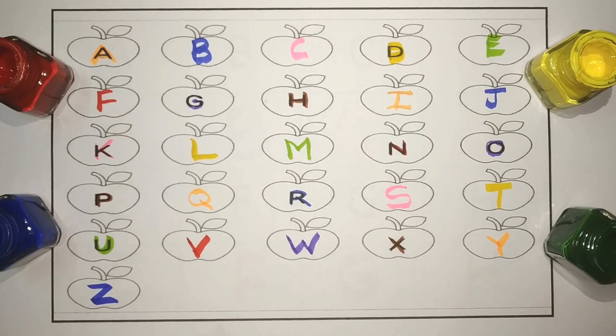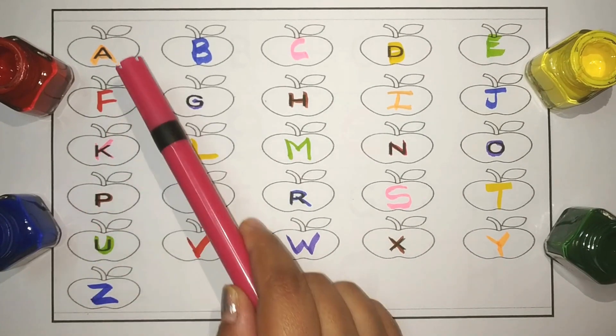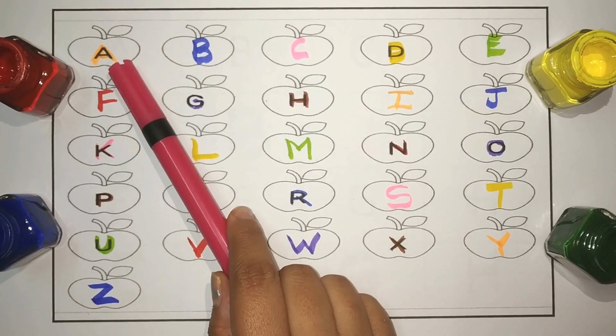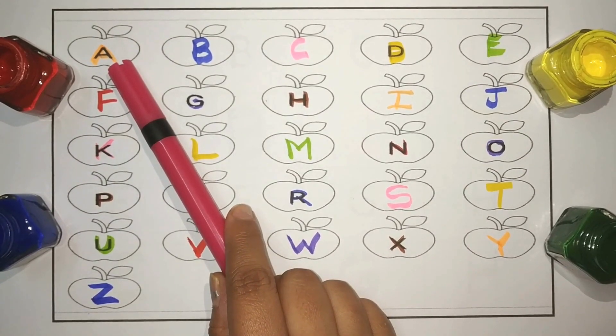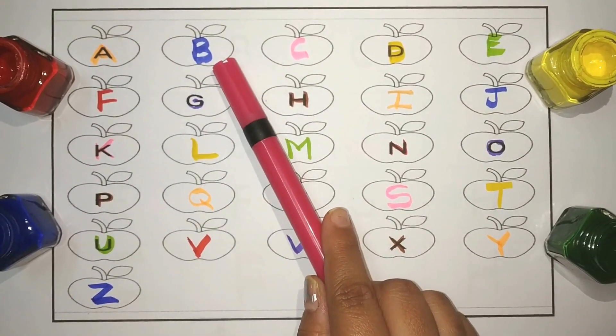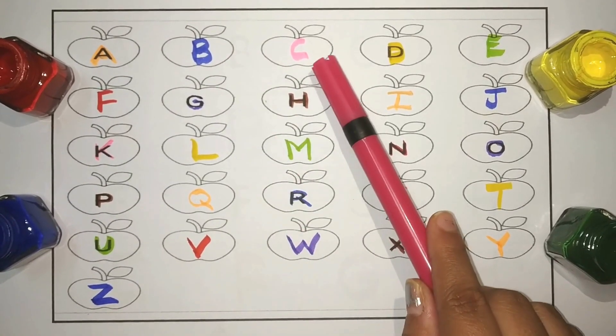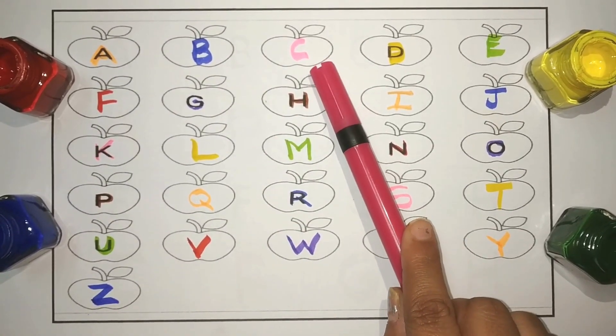Let's revise. A. A for apple. B. B for ball. C. C for cat.